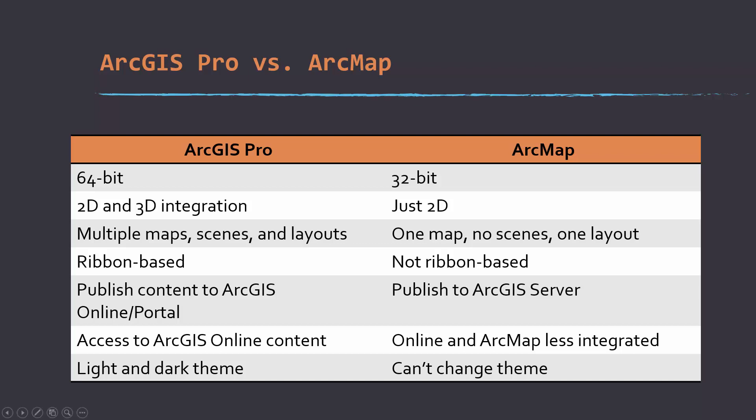ArcGIS Pro is ribbon-based, similar to Microsoft Word or Microsoft PowerPoint, which is considered a more modern design for software, whereas ArcMap wasn't designed that way. ArcGIS Pro has fairly tight integration with ArcGIS Online and ArcPortal, whereas ArcMap is more integrated with ArcGIS Server. It's actually pretty easy to move content back and forth between online and desktop in the Pro environment, but it's a little more complex to publish data to a server in ArcPro versus ArcMap.